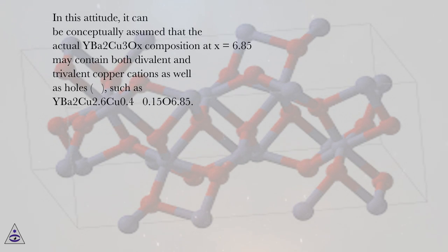It can be conceptually assumed that the actual YBa2CuO3Aux composition at X equals 6.85 may contain both divalent and trivalent copper cations as well as holes, such as YBa2Cu2+0.4Cu3+0.15O6.85.